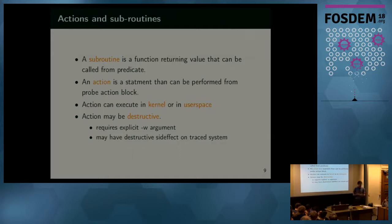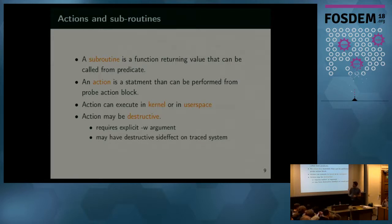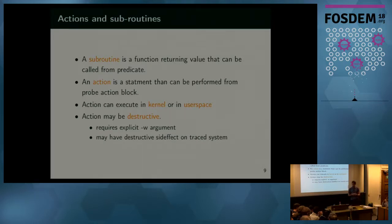We have something called a subroutine — think of it as a function returning a value. A subroutine is used when you need to convert data or copy something from user space to kernel space or vice versa, and it can return a pointer to the destination in kernel space for D-trace. Usually it can be used in predicates because it has a return value. The action is only in the action block — it is a statement with no return value, and it lets you record something into the buffers or perform some effect on the system.